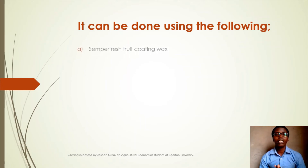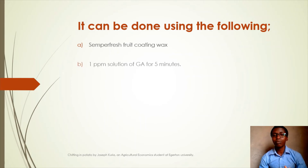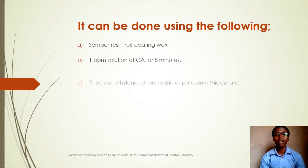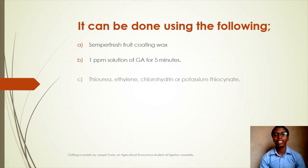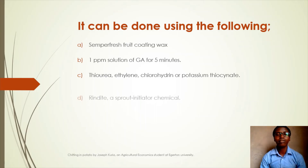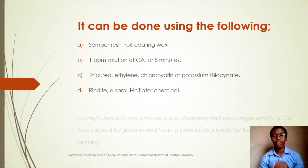Chemical chitting can be done in various ways. Number one, we can use simple fresh fruit coating. Number two, we can dip the tubers in a 1 ppm solution of gibberellic acid (GA) for five minutes. Number three, we can treat the tubers with ethyl ethylene chlorohydrin or potassium cyanide.